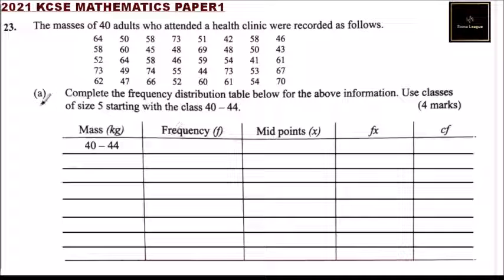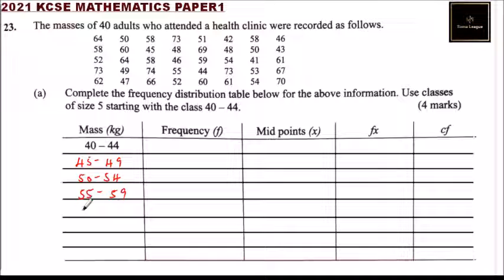We are using a class interval of 5. If you subtract the lower class limit from the upper class limit, you get 5. So the classes are: 40 to 44, 45 to 49, 50 to 54, 55 to 59, 60 to 64, 65 to 69, and 70 to 74.